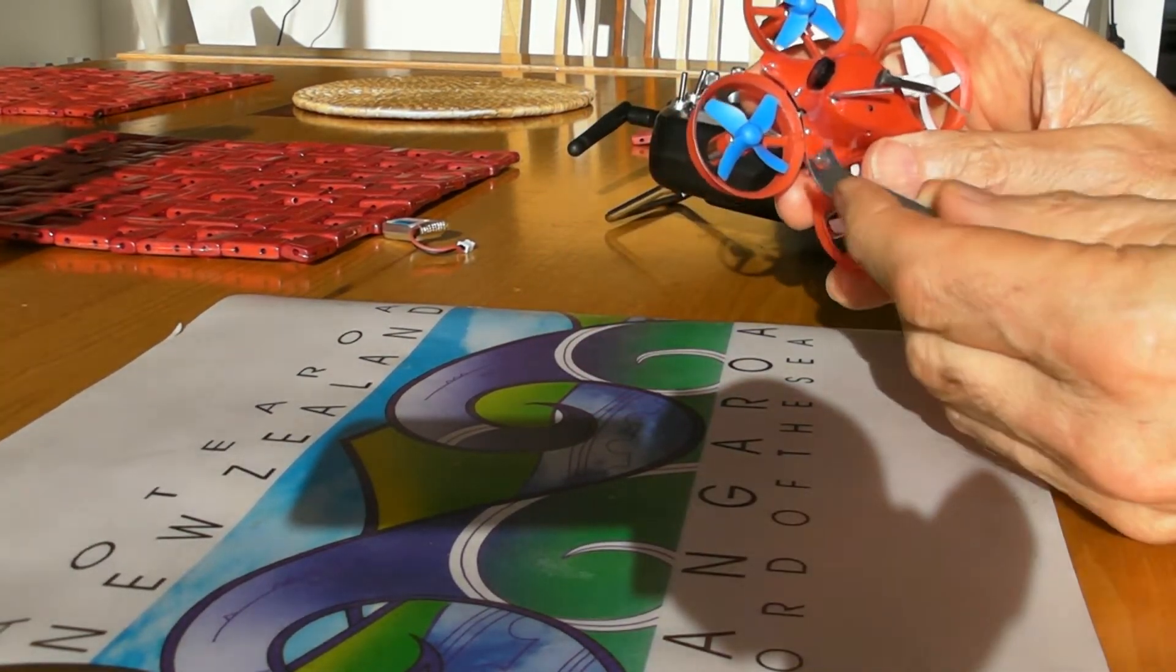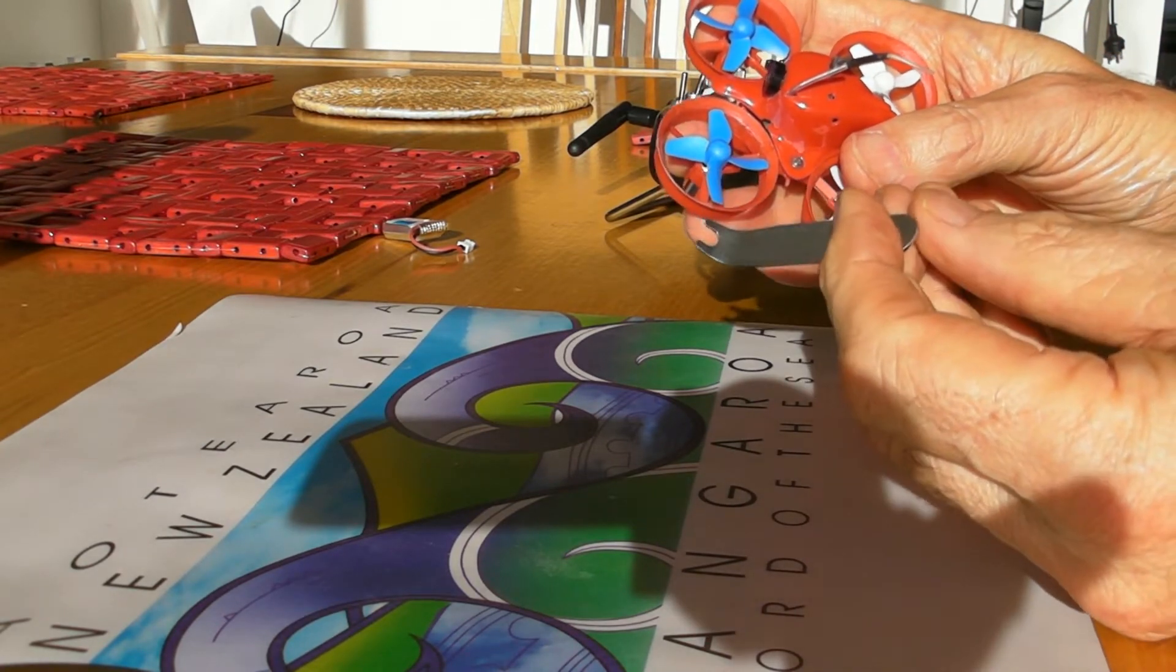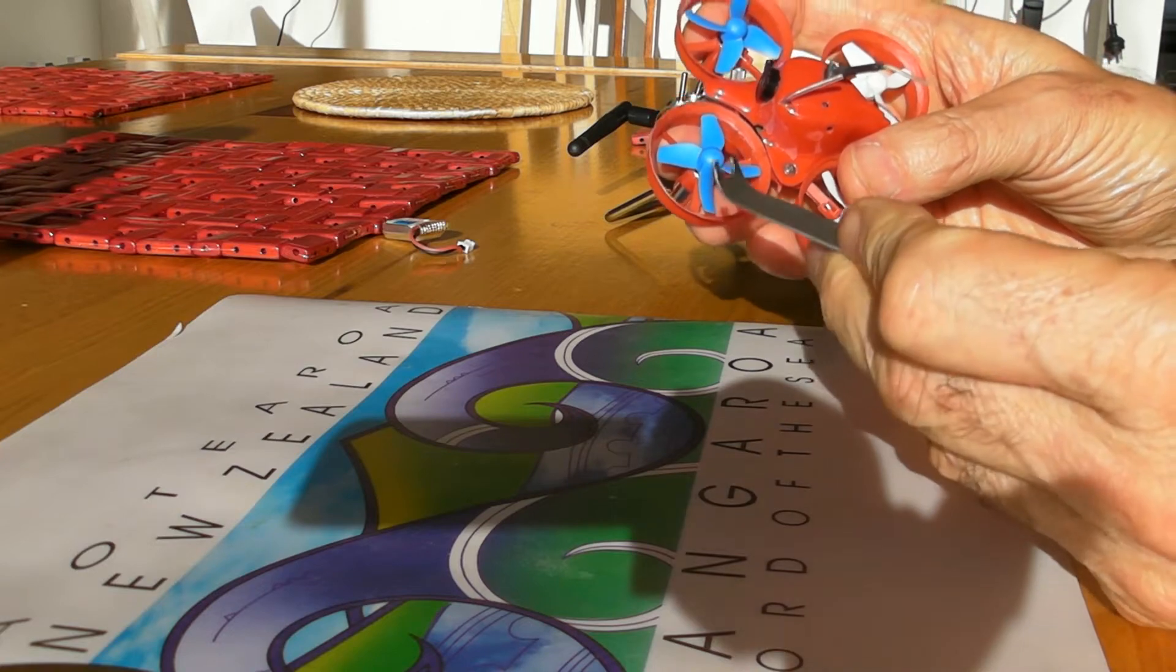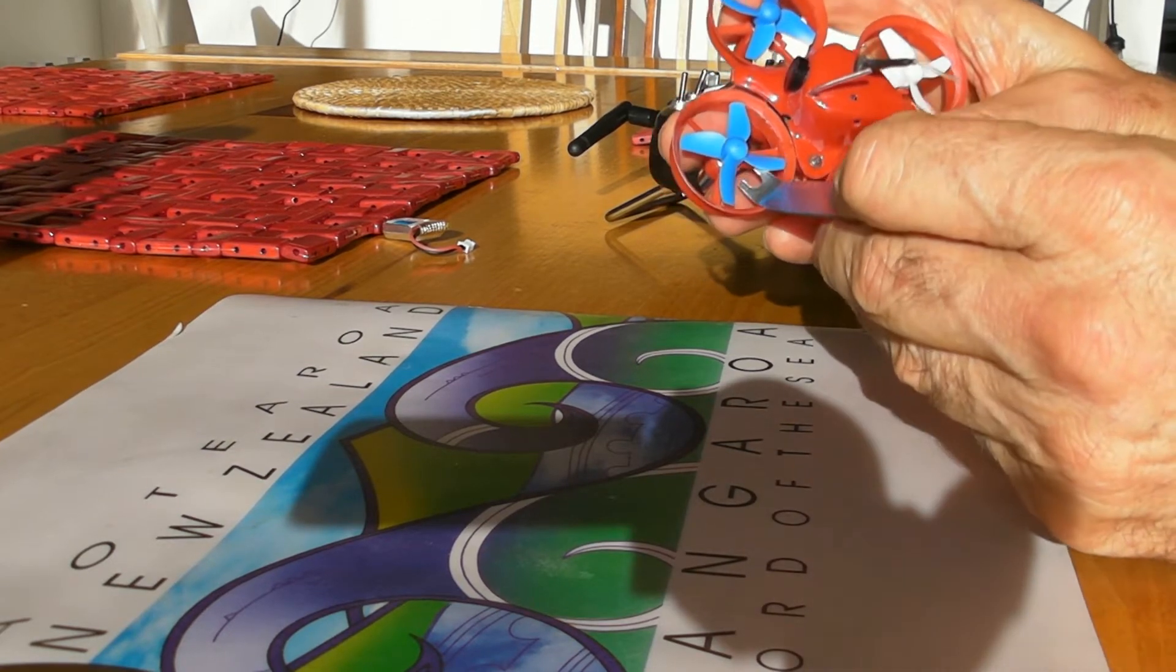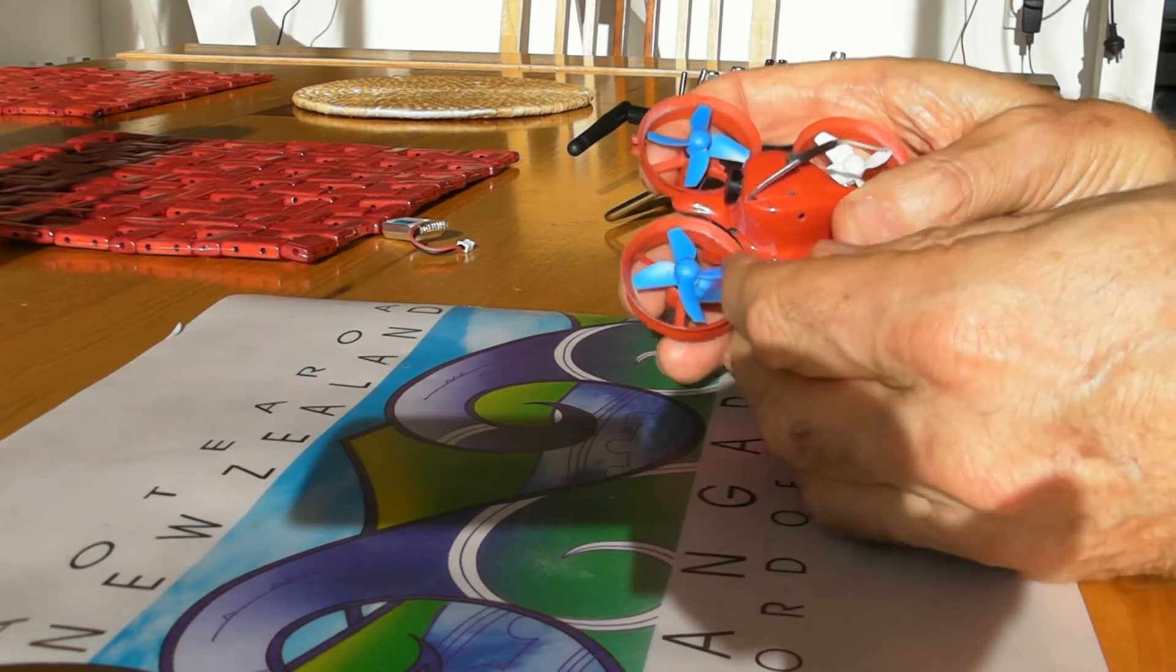So the front's the most troublesome. This is the tool that came with the Hubsan X4 107L. You can probably make something similar, but they say just pull it off with your hand, but really you need something like this to do it.